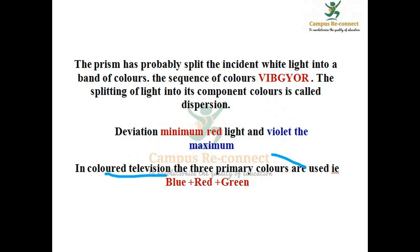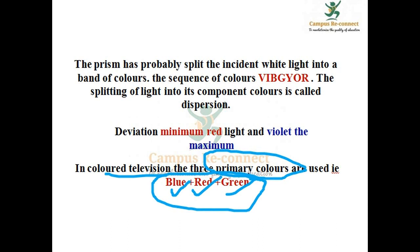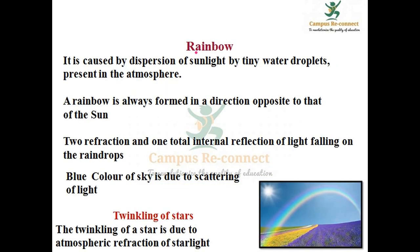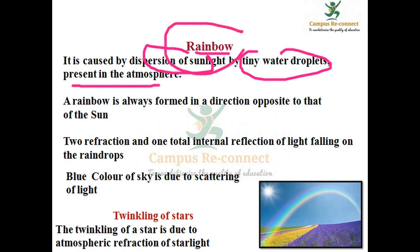The primary colors are blue, red, and green. This is the rainbow. This is the dispersion of sunlight, and tiny water droplets are present. This rainbow is formed in the opposite direction of the sun.